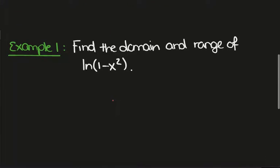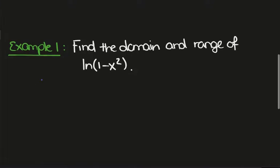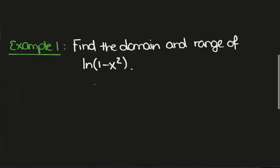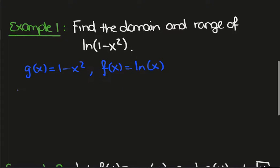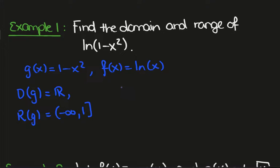Let's look at an example — it's best to illustrate through examples. Find the domain and range of ln(1 - x²). The composites here: g(x) = 1 - x² and f(x) = ln(x). The domain of g is ℝ and the range of g is (-∞, 1]. The domain of f is (0, ∞).